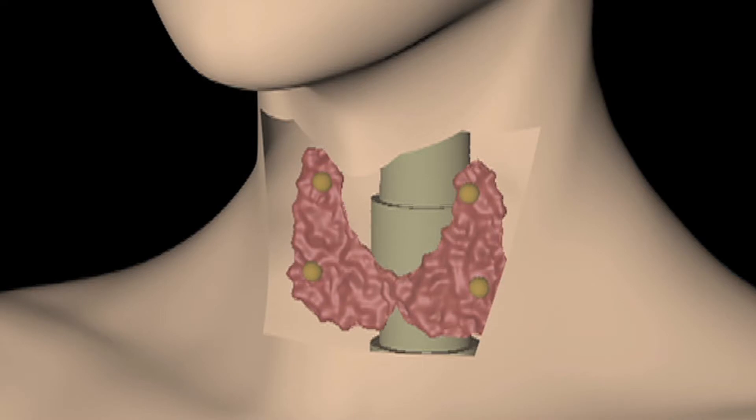There are many different reasons for the thyroid gland to not function normally. The main group is that little bits of the thyroid gland overgrow — that doesn't mean cancer, it's just little bits called nodules — and they can start to make thyroid hormone when they shouldn't.